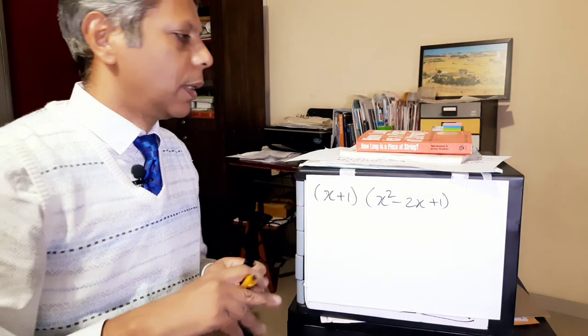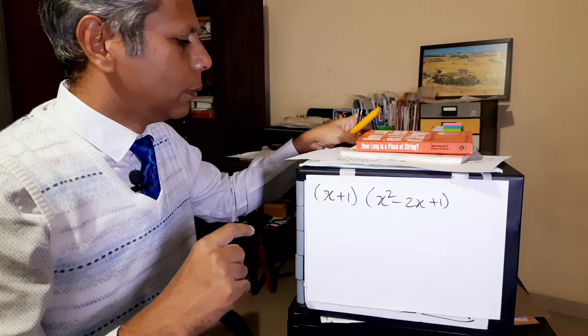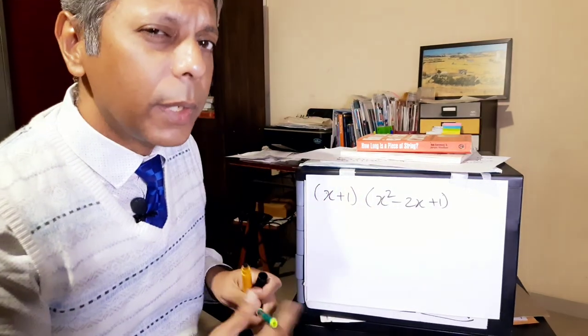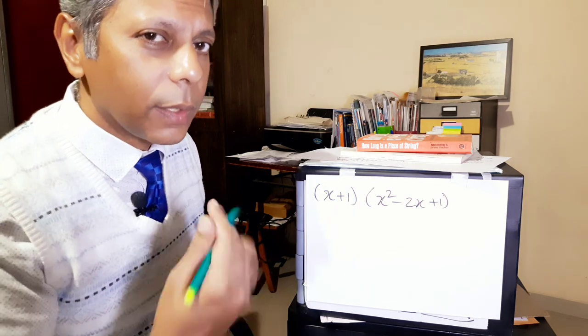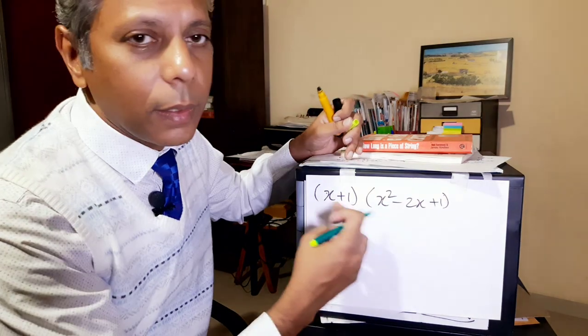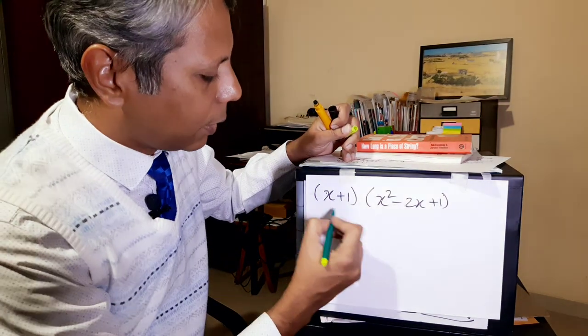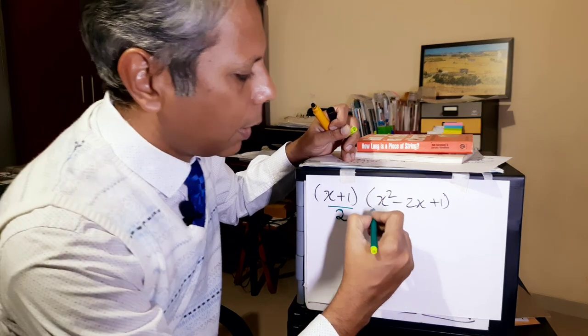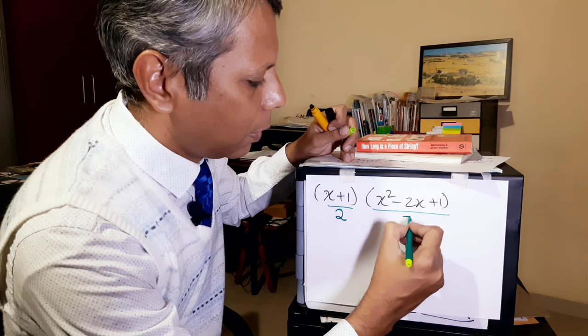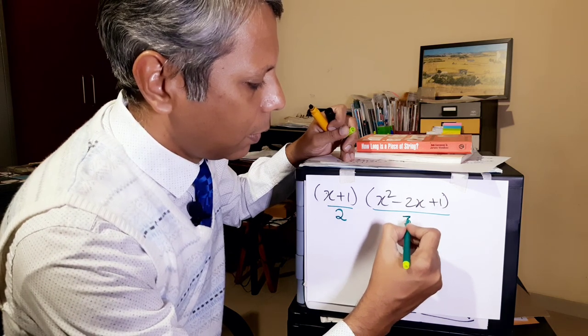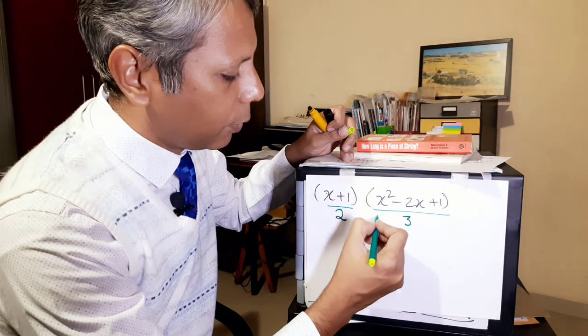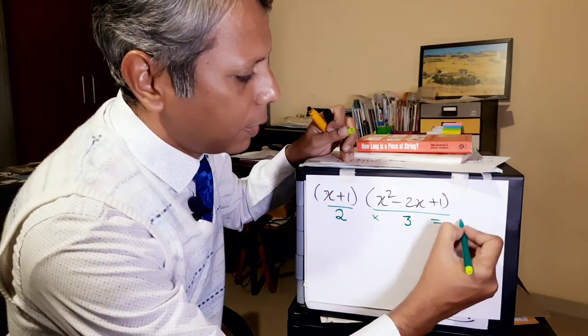Last time I told you that when you have two algebraic expressions and you multiply them, how many terms do you think there will be when you expand this? So here there are two terms and here there are three terms. So when you fully multiply them, you should get six terms.